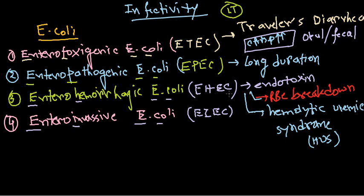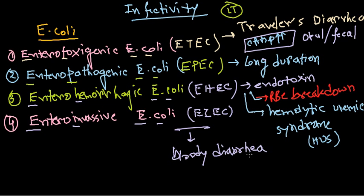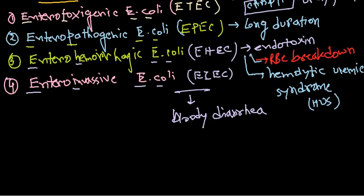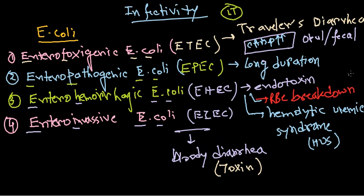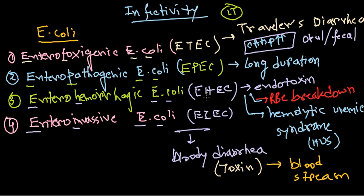The fourth type is EIEC — enteroinvasive E. coli. This again causes bloody diarrhea. The reason is again a toxin it produces. Importantly, EIEC is non-pathogenic when present in the gut normally, but when transferred to the bloodstream it becomes highly pathogenic and causes severe diarrhea.